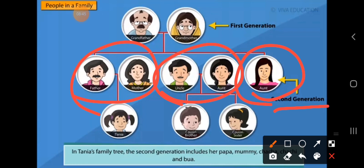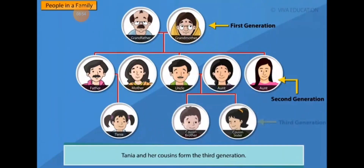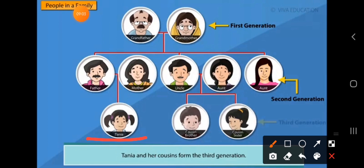This is known as the second generation — parents, uncles, aunts. Your father, mother, uncle, chacha-chachi, tau ji, tai ji, bua — these come in the second generation. Then Tanya and her cousins form the third generation. These are the children of uncle and aunty, known as cousins. First generation: grandparents; second generation: father, mother, uncle, aunt; third generation: you and your cousins.